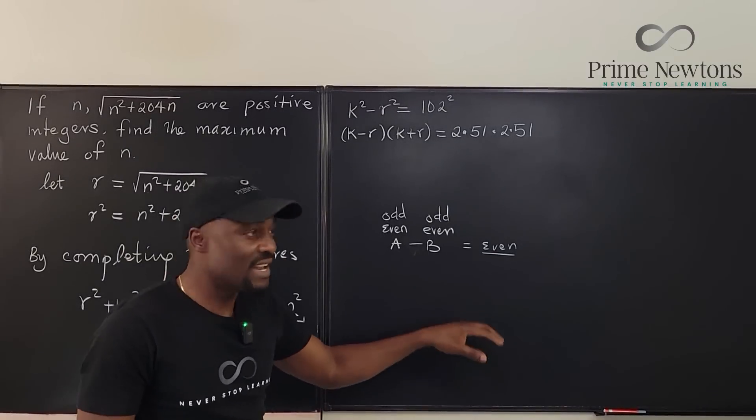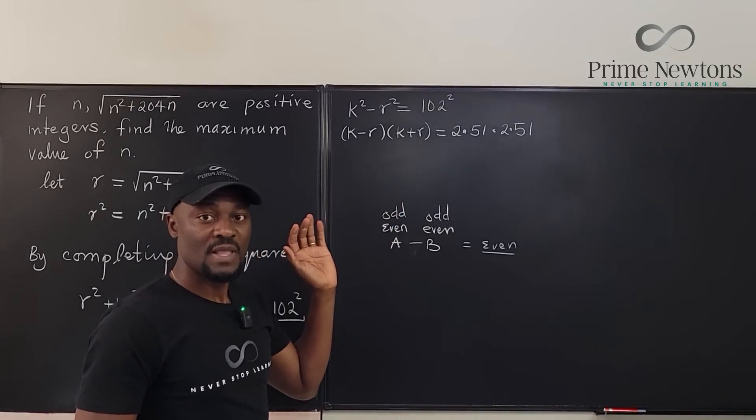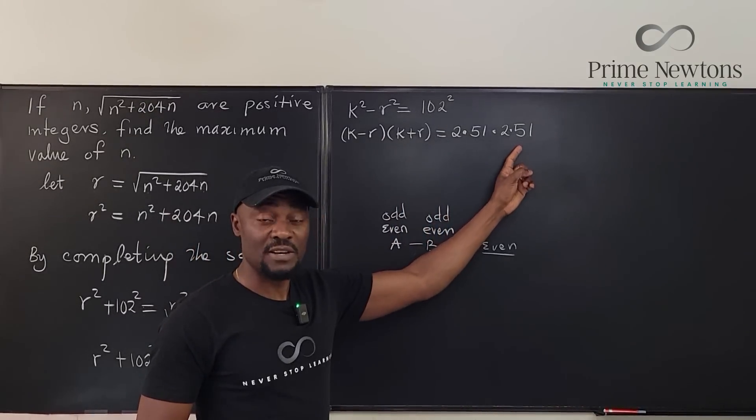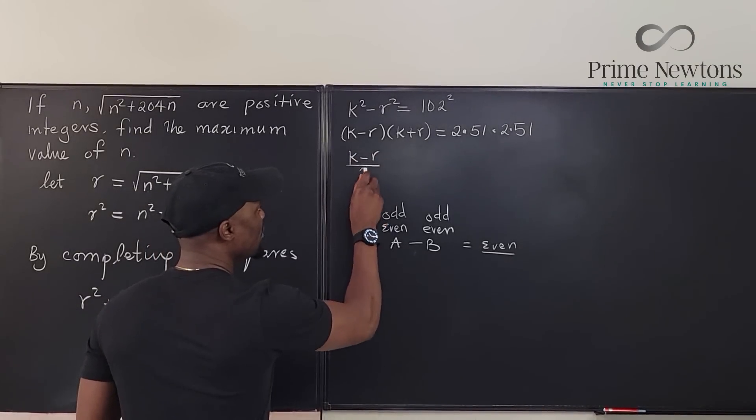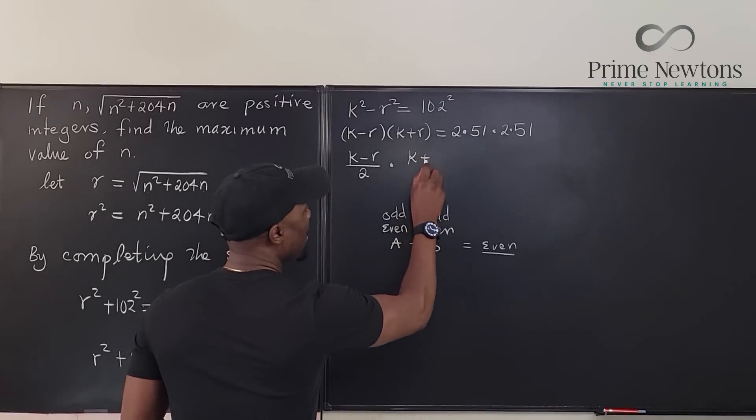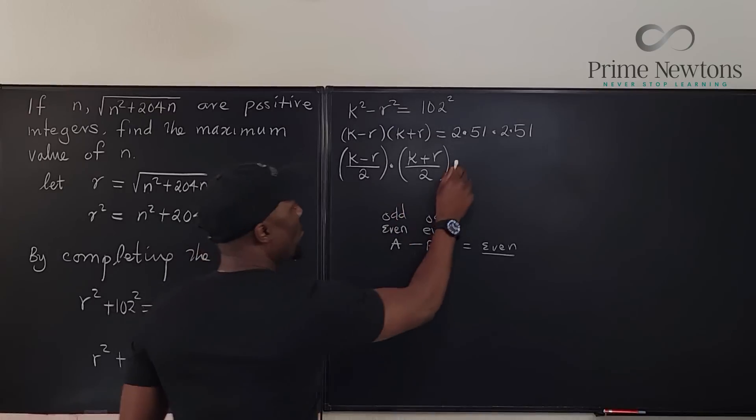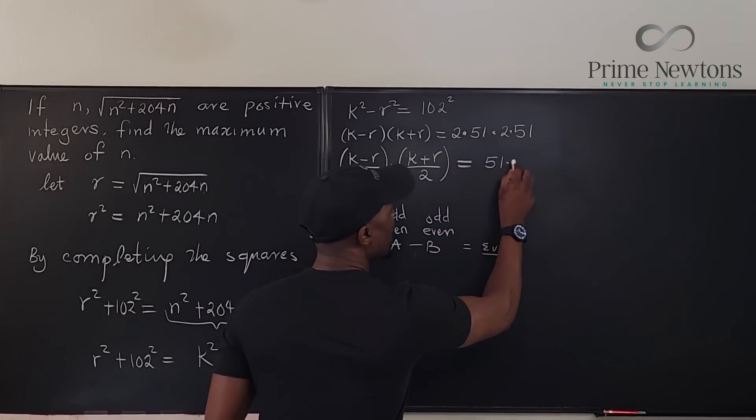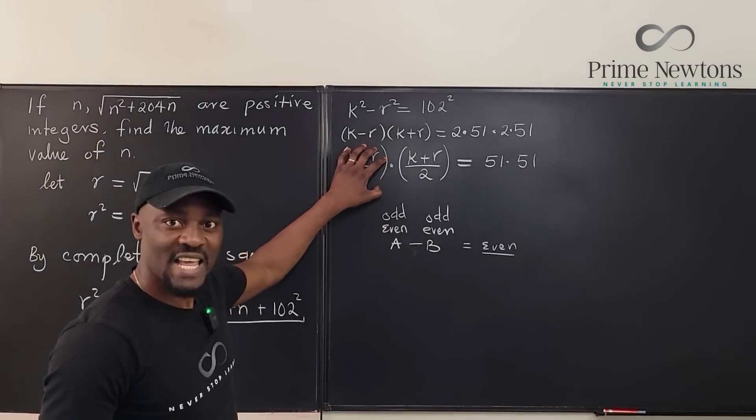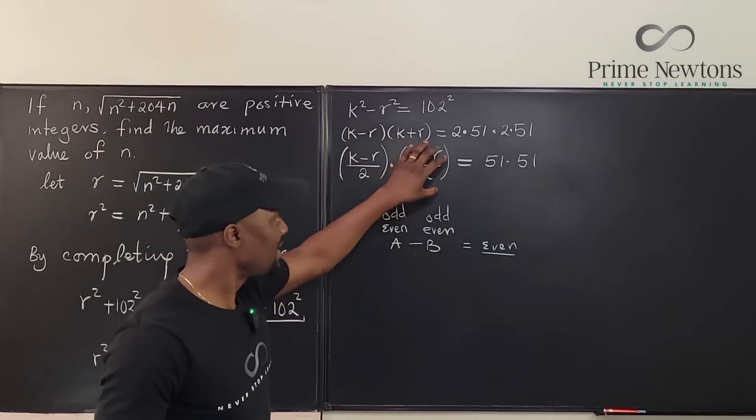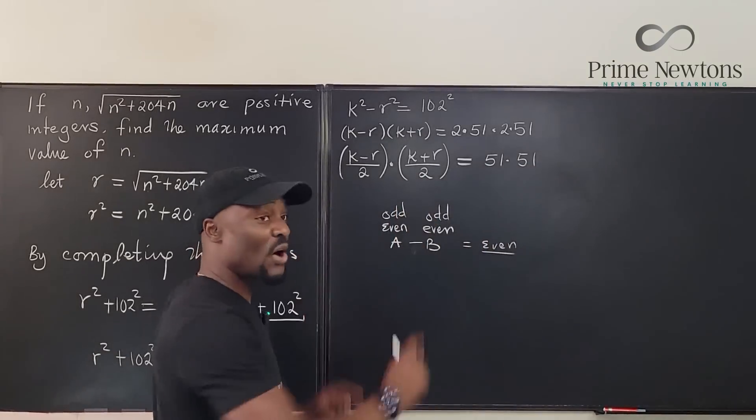You need this in order to make your life easy. What I'm going to do next is I'm going to divide both sides by four, so as to reduce the number of options I have here. I'm going to say k minus r divided by 2 times k plus r divided by 2 will be equal to 51 times 51. Now I know this is still an integer because it was even before it was divided by 2. This also is an integer. And now what I have on the right hand side is odd. So clearly these two numbers are odd numbers.